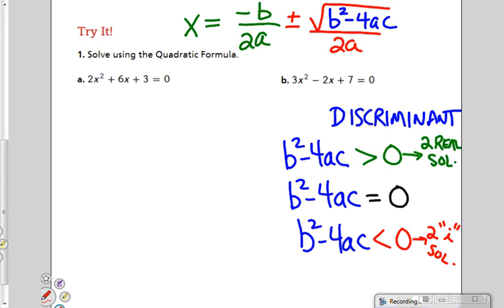We're going to have i. If it's equal to 0, that's the best case scenario. You're only going to have one real solution.